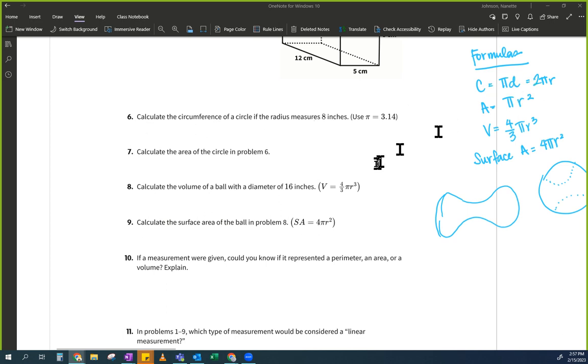And then we're just going to go through. So it says calculate the circumference. So the first thing I'm going to do is I'm going to write out my circumference formula. So C equals to pi D equals to two pi R. And I'm going to use whichever one that they give me. It says if the radius is eight inches.